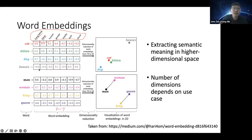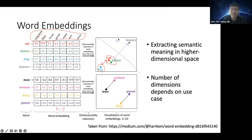If you were to visualize the embedding space using dimensionality reduction like PCA or LDA, you should see that similar words like cat and kitten cluster together. Something similar like dog would be close by, while something very different like a house would be very far away from the living things. This is the kind of semantic grouping that hopefully emerges from word embeddings.